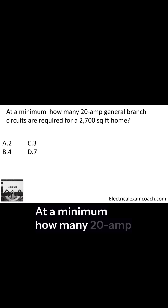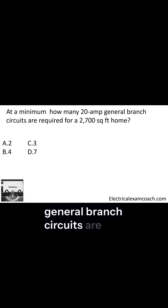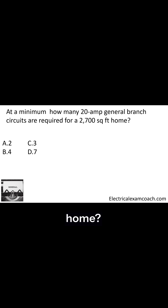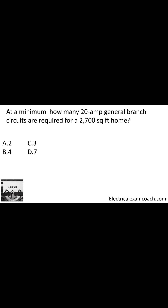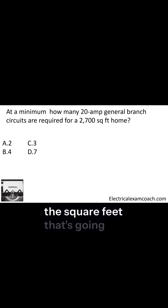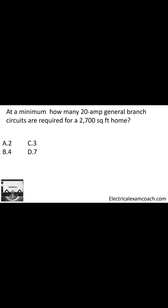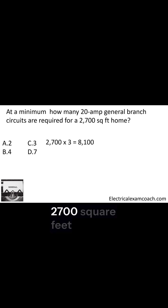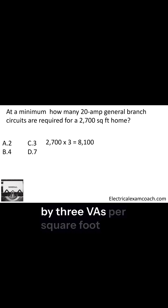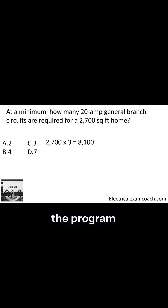At a minimum, how many 20 amp general branch circuits are required for a 2700 square foot home? Your question may not say 'general' — it may say 'for lighting and receptacles,' keep an eye out for that. But usually if they give you the square feet, that's the red flag that you're calculating the general branch circuits. The first step is to take our 2700 square feet and multiply it by three VAs per square foot, like we've learned previously in the program.